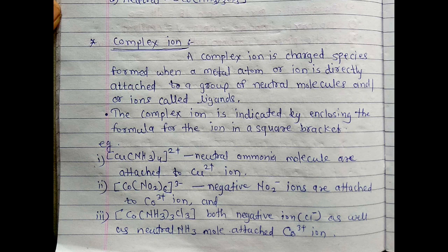Co(NH3)4^3+, and last example: Co(NH3)4Cl^2+, both negative ion Cl- as well as neutral NH3 molecule attached to the Co^3+ ion.